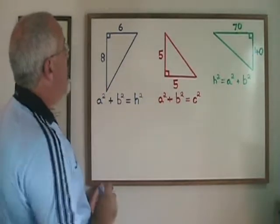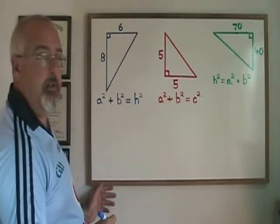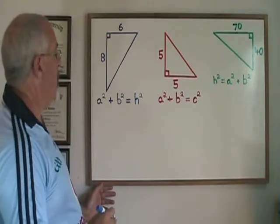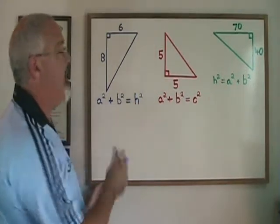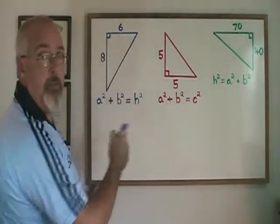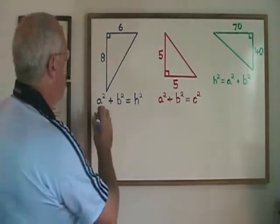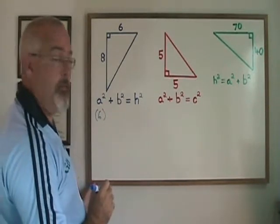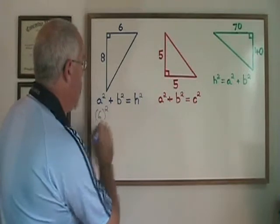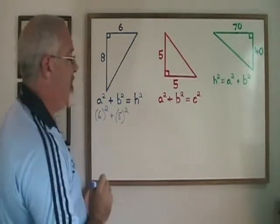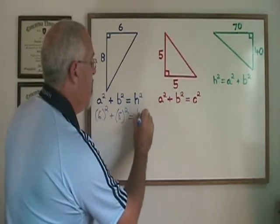In this example, the shortest side is six units in length and the medium length side is eight units in length. I am going to replace my a and b with the six and the eight. It doesn't matter if I call the six a or b. Using six as my a, I get 6² + 8² = h².